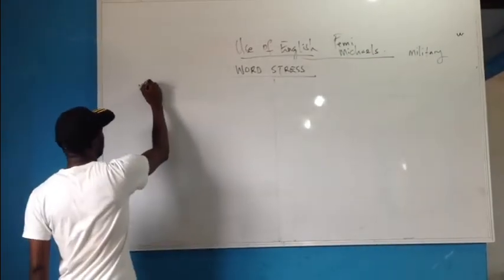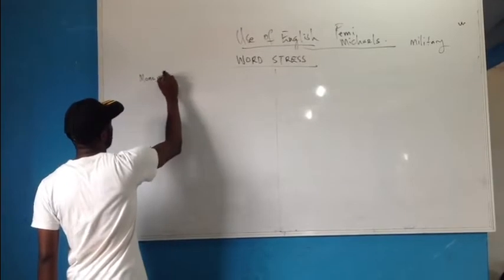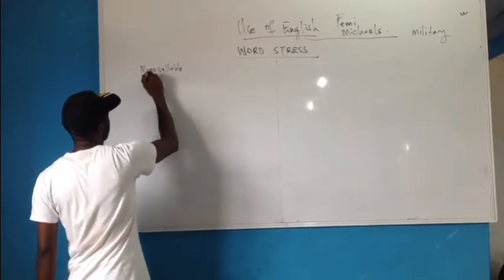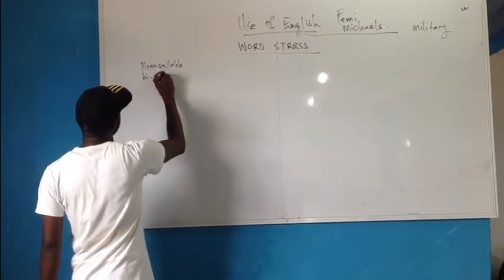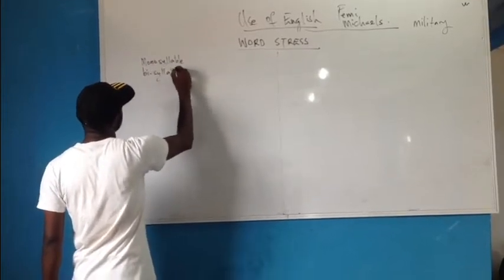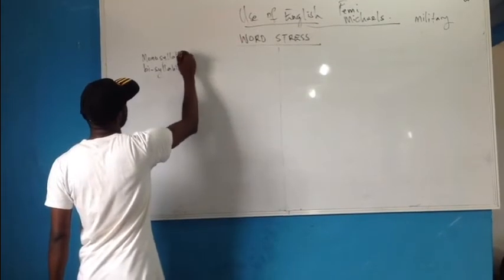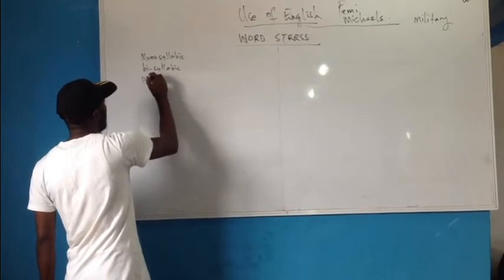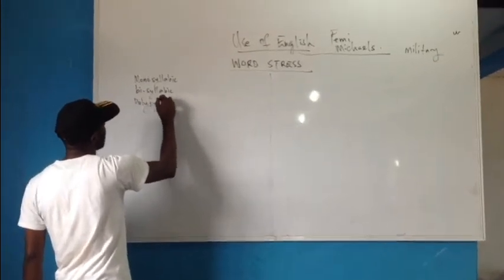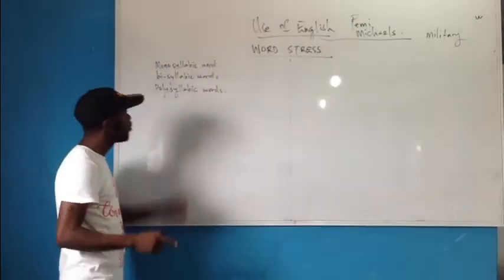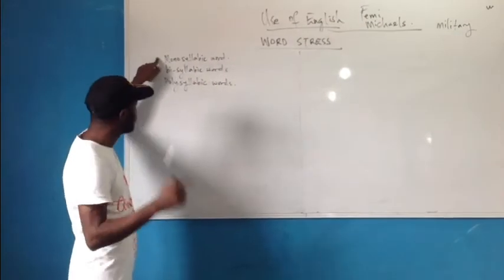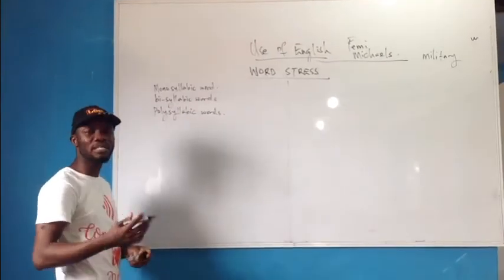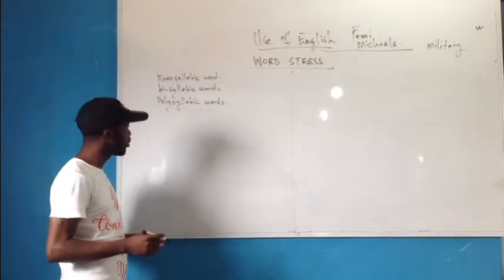We have monosyllabic words, bisyllabic words, and the rest are polysyllabic words. Monosyllabic means one syllable; bisyllabic means two syllables; polysyllabic means more than two — three and upwards.